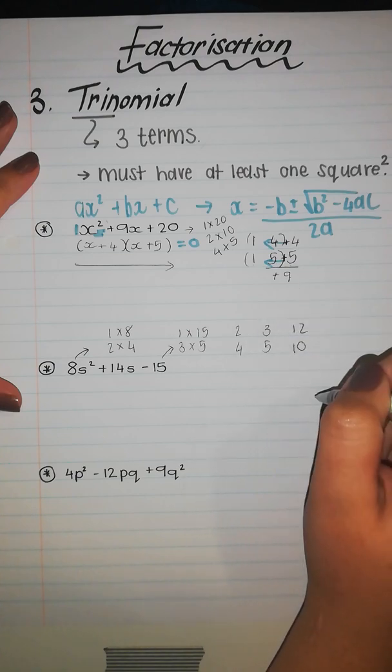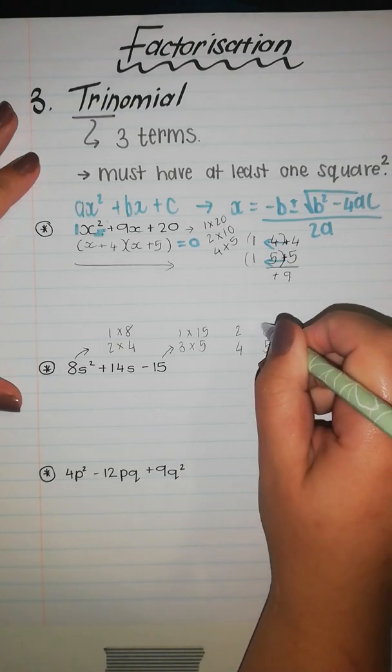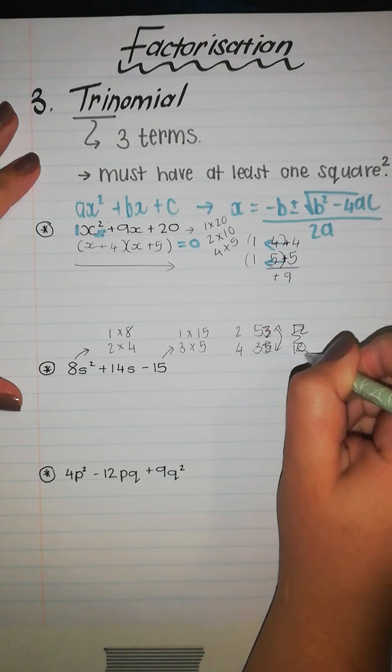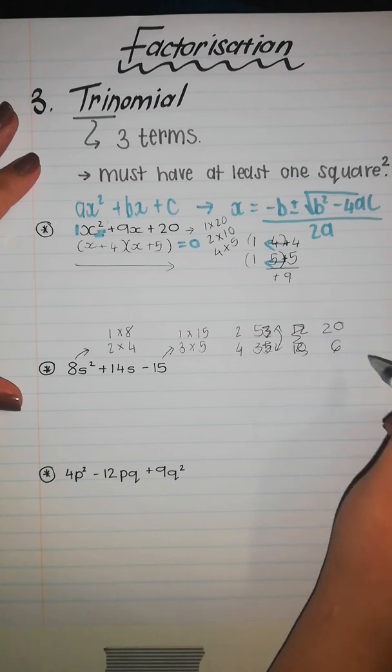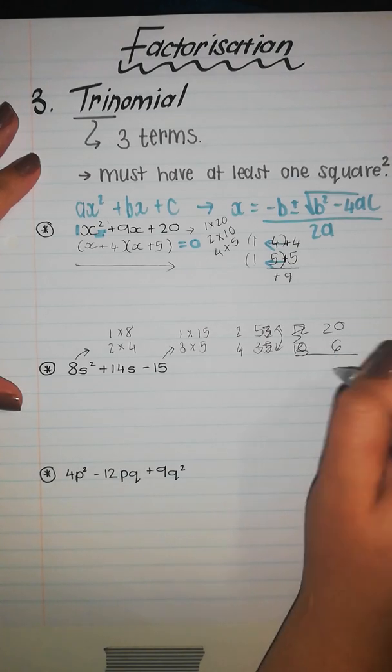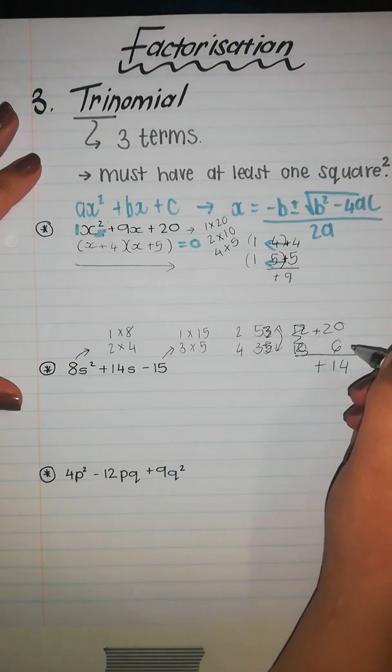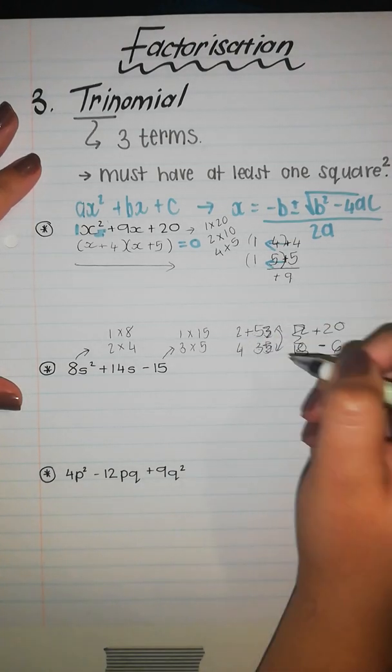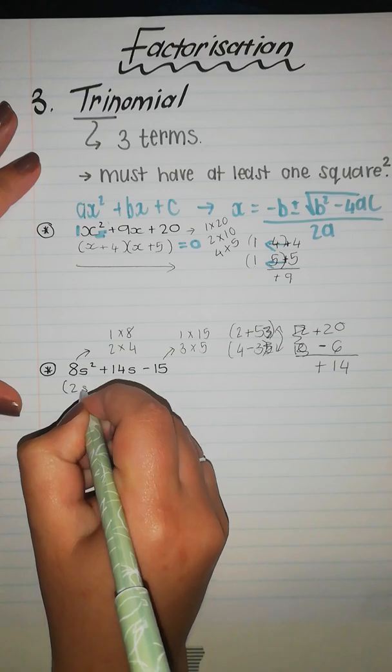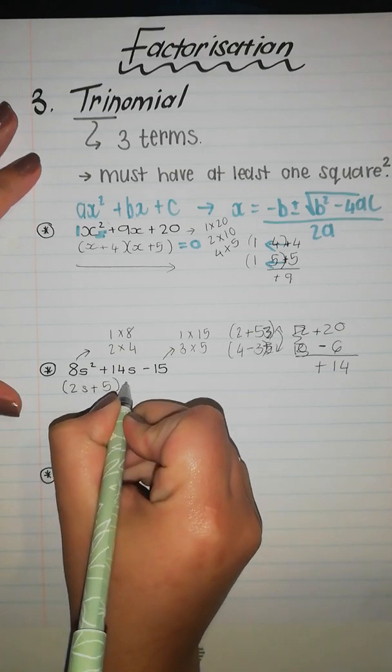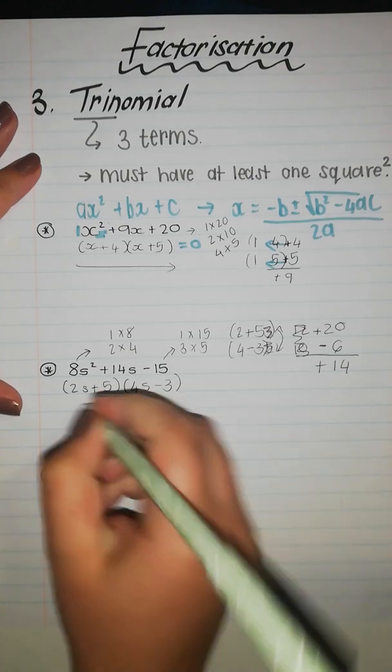Now let's try the other way around saying this is now 5, this is now 3. 2 times 3 is 6, 4 times 5 is 20. Hey, that's helping! And I want positive 14. How am I going to get that? I'm going to have positive 20 minus 6. If I bring it over to this side, positive, negative, that's going to be my brackets. So my first bracket is 2s plus 5, and my second bracket will be 4s minus 3. Amazing.